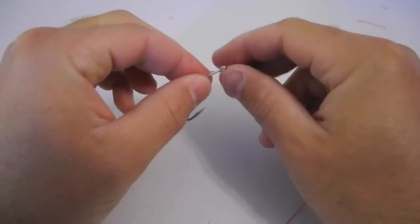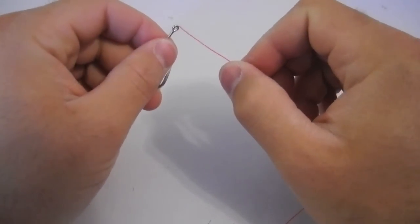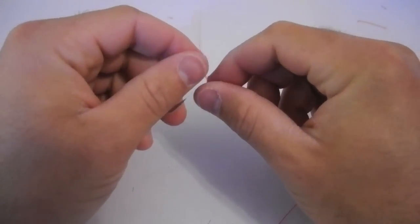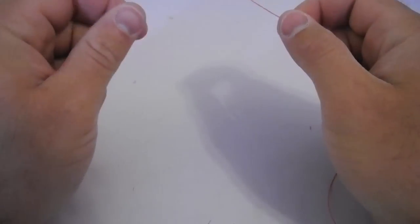This knot has literally zero bulk. It doesn't build up. It's great for small flies because you cannot see the knot. It is very, very small.